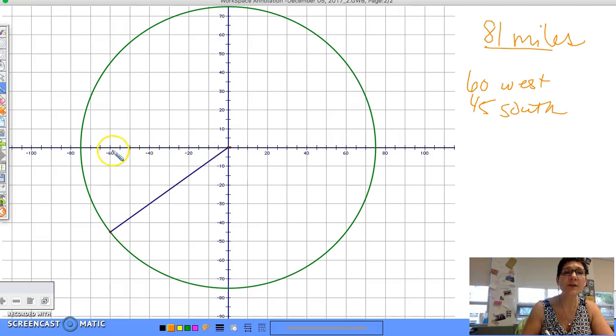You could just easily create a right triangle, right, and then do Pythag swag, where this is 60 and this is 45, because you're going out 60 and you're going down 45. And if you do Pythag swag, you should get 75 miles.